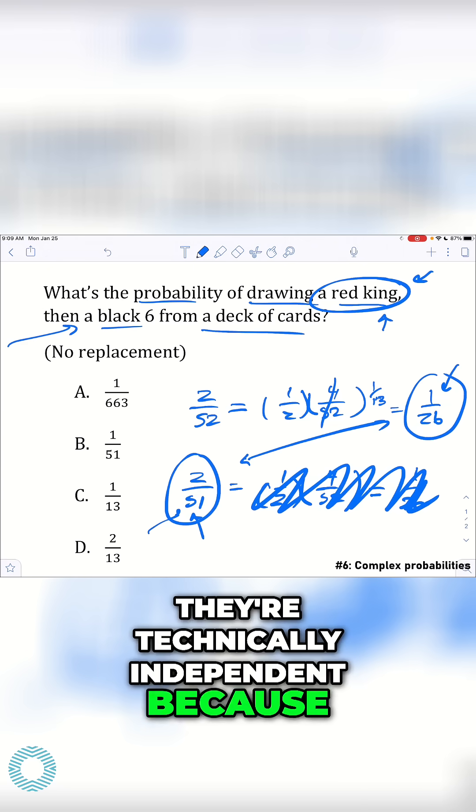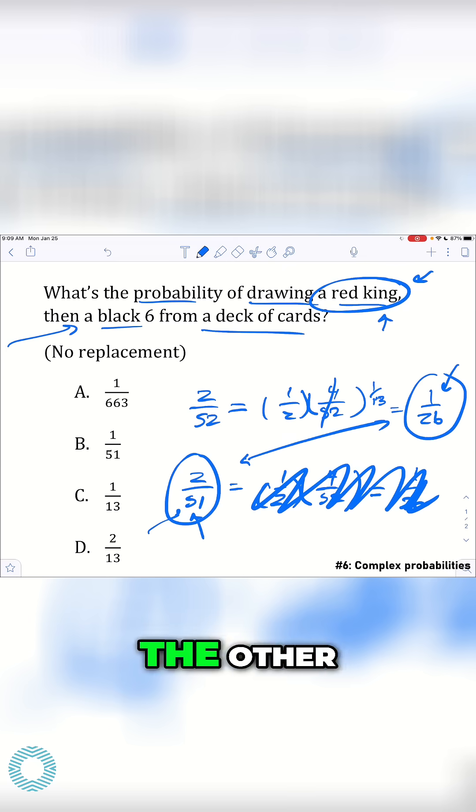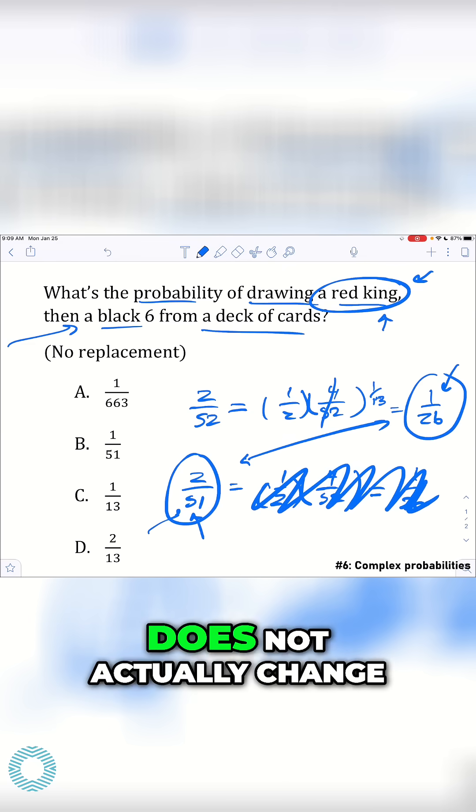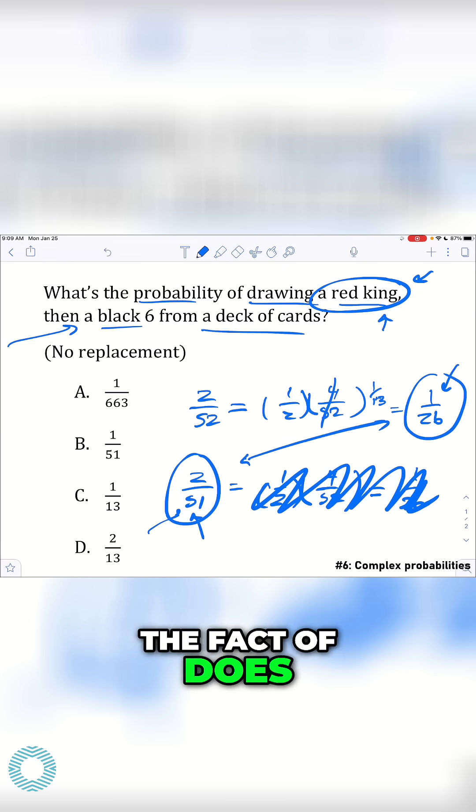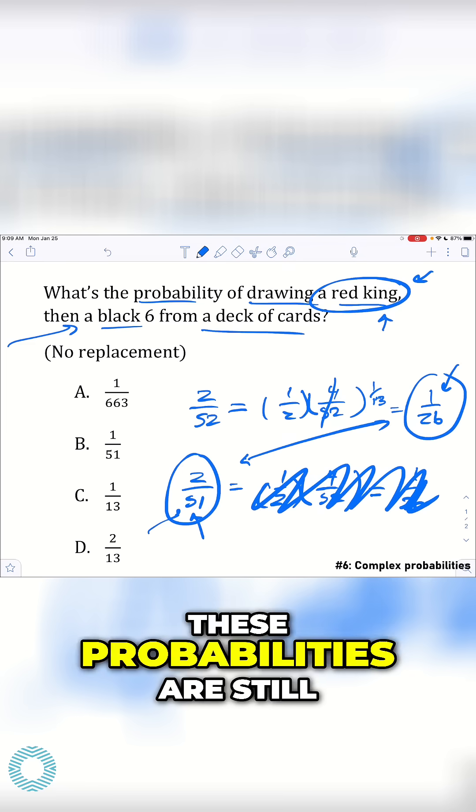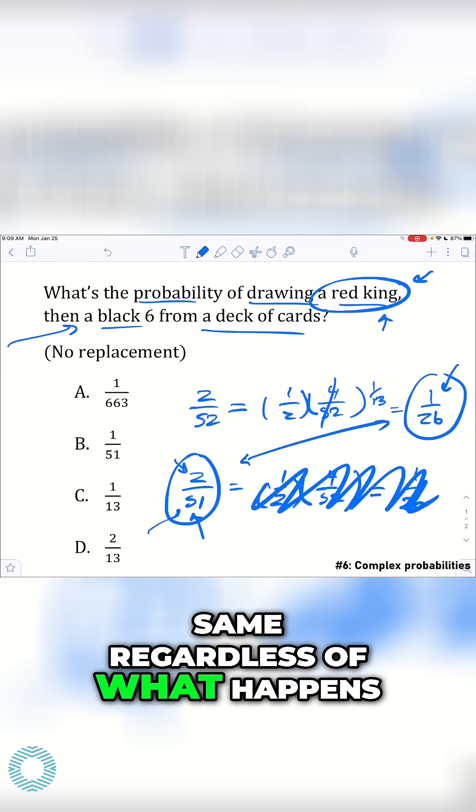they're technically independent because one doesn't directly impact the other. Like me getting a red king does not actually change the fact, does not make it more or less likely. These probabilities are still going to be the same regardless of what happens.